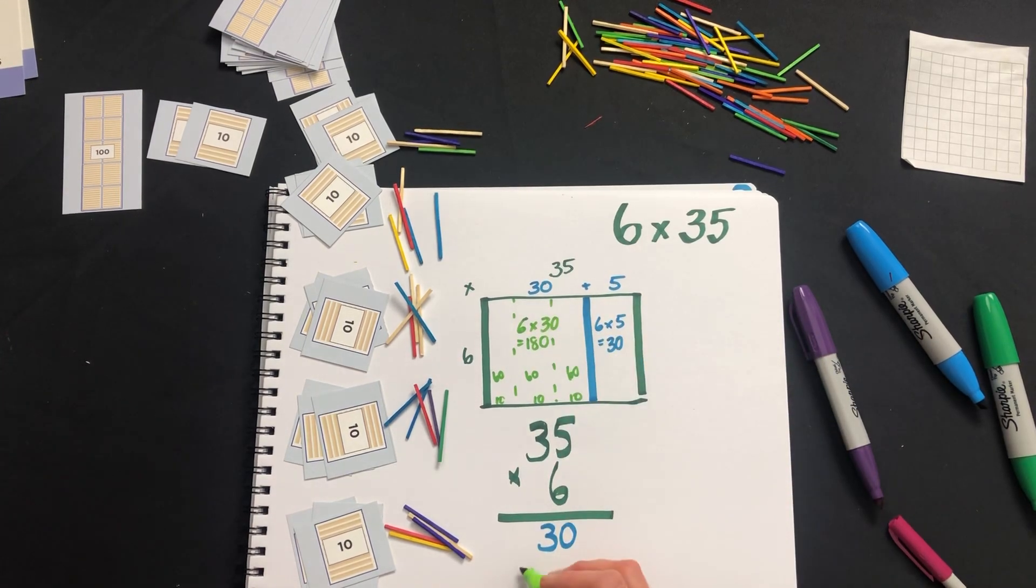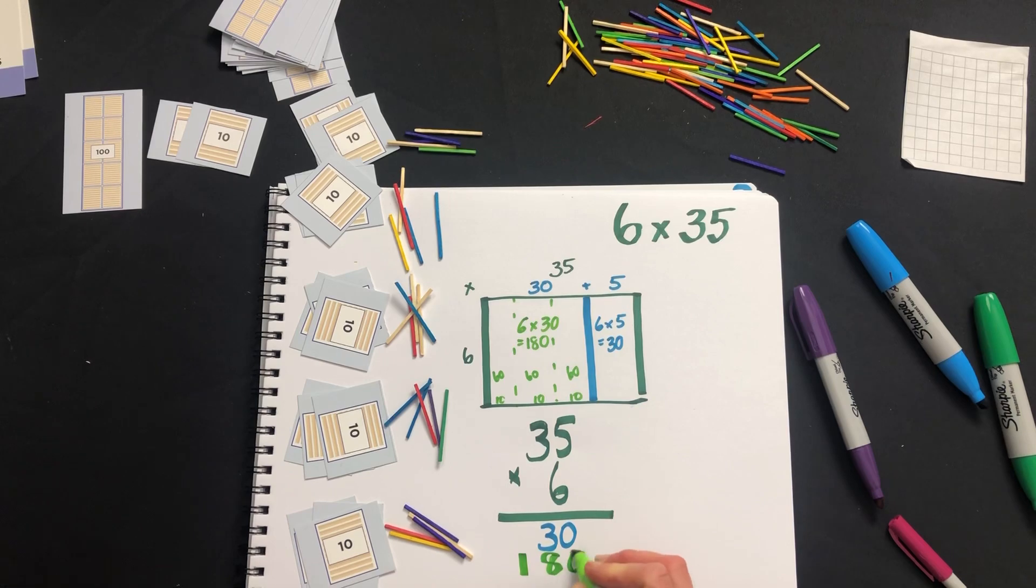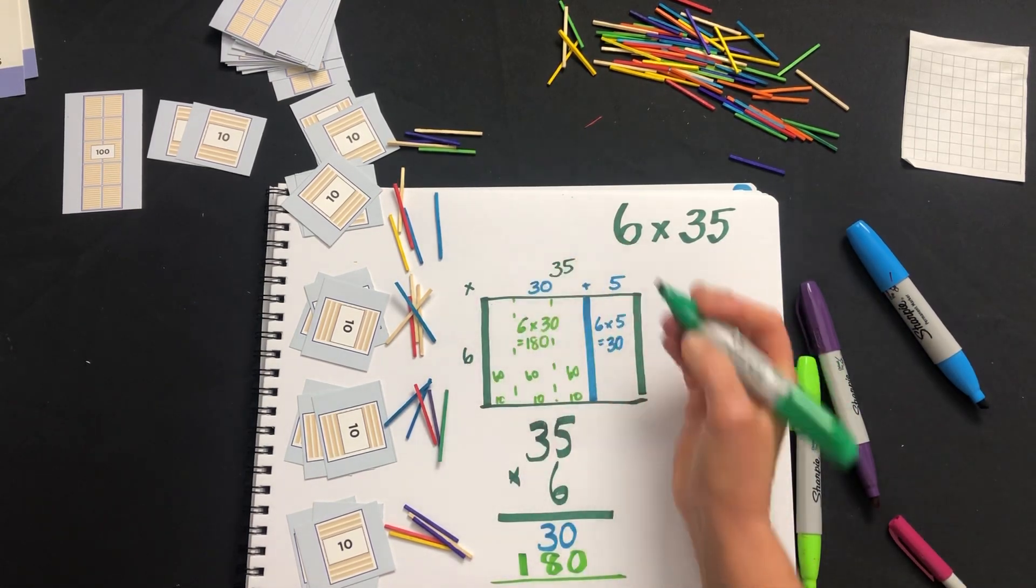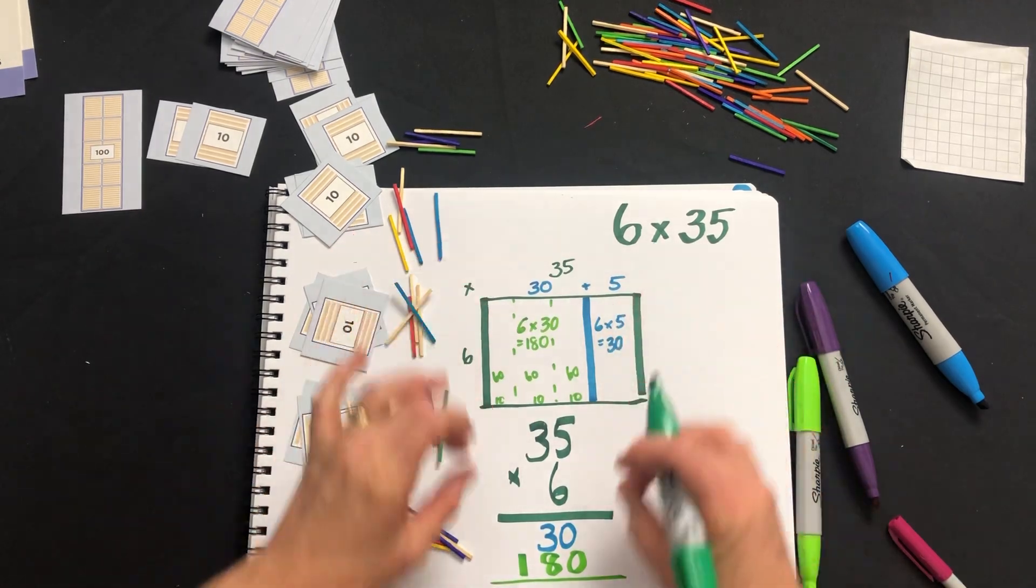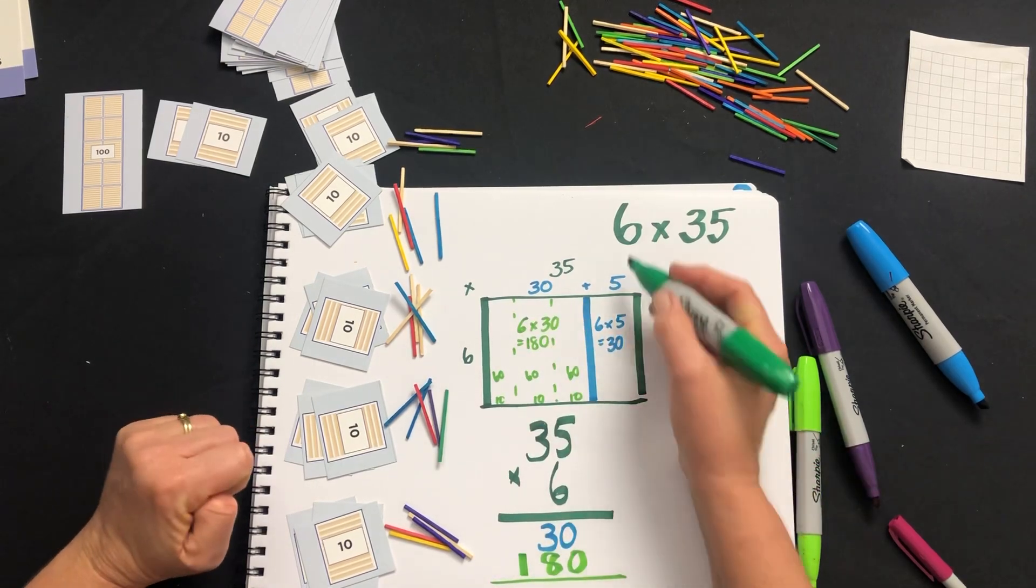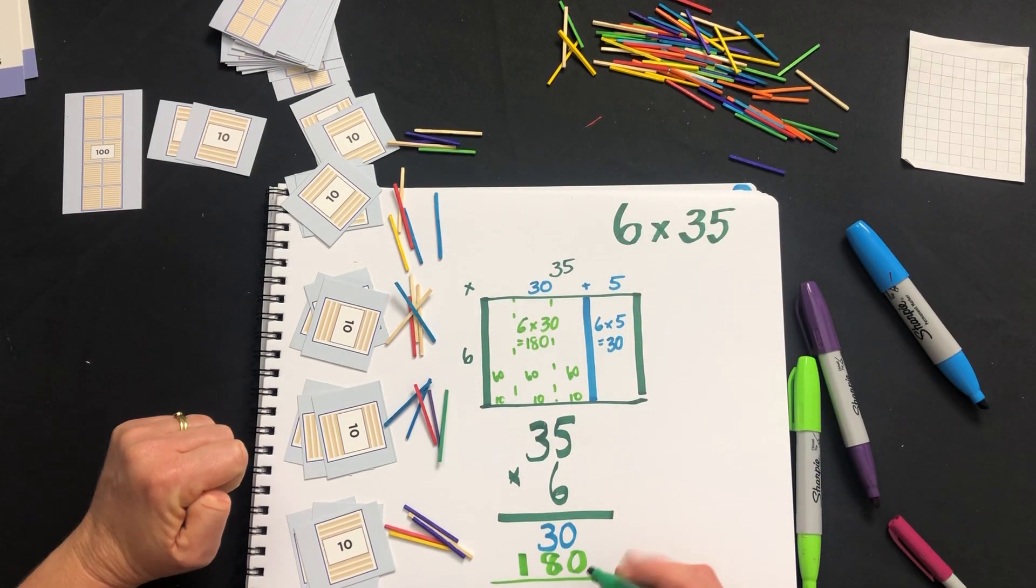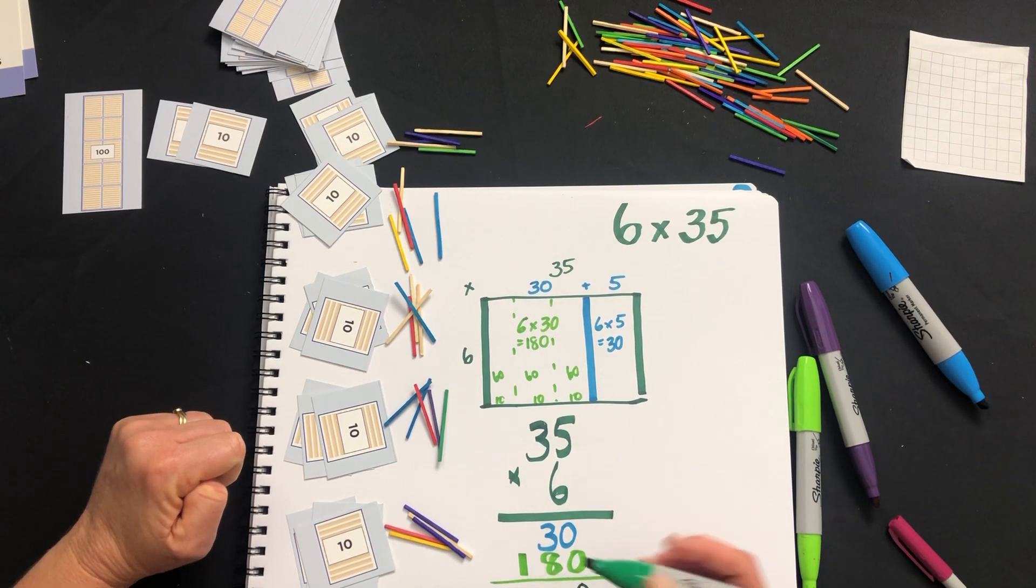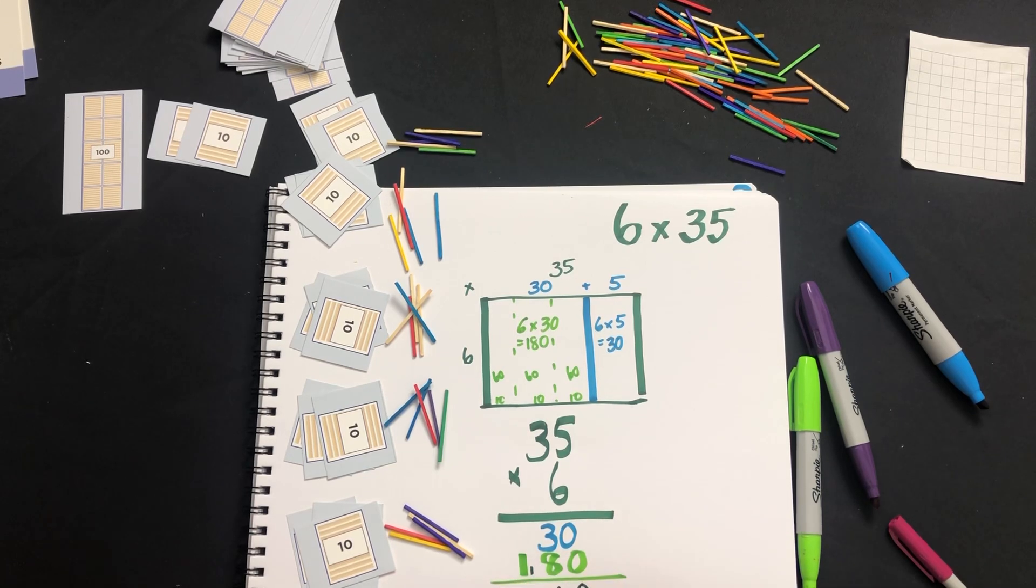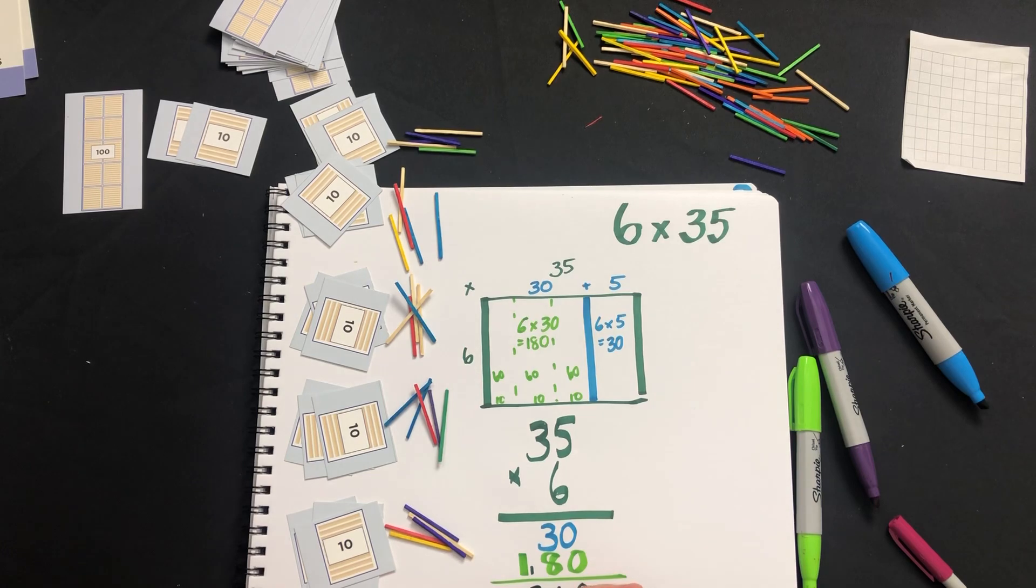So 6 times 30 is 180, and now we have to add those together to get our big rectangle, because the two smaller rectangles - our 30 and our 180 - join together to give us our big rectangle of 6 times 35. Zero and zero is zero, 30 and 80 is 110, so we put down the one and carry our 100, and now we've got 100 plus another 100 is 210.